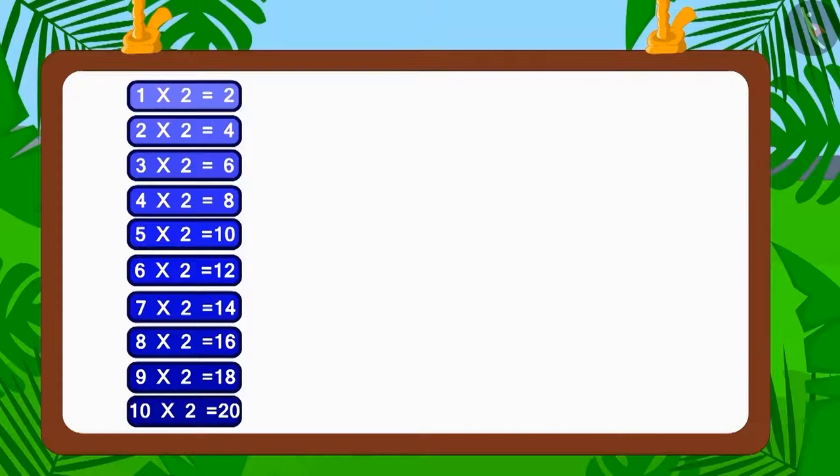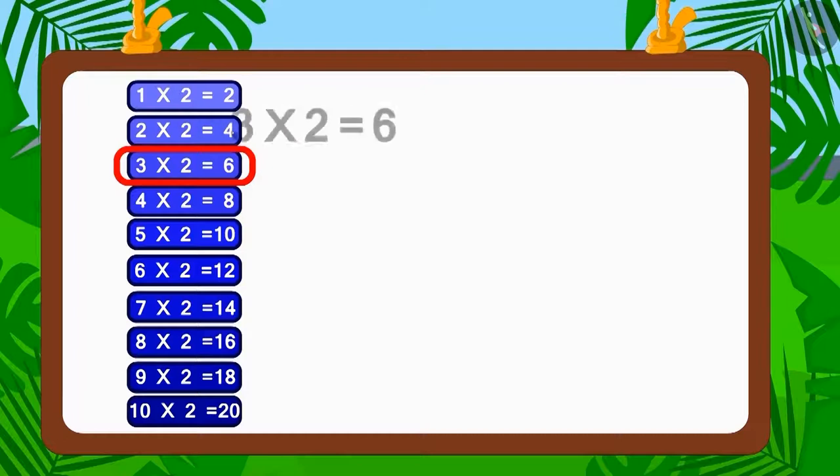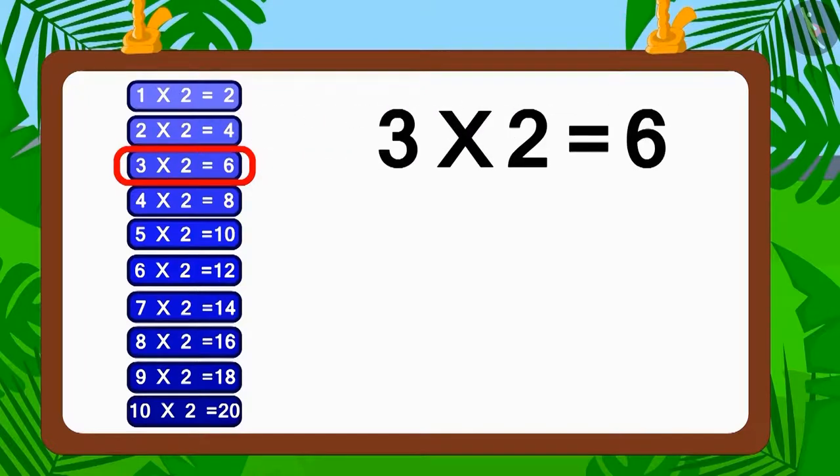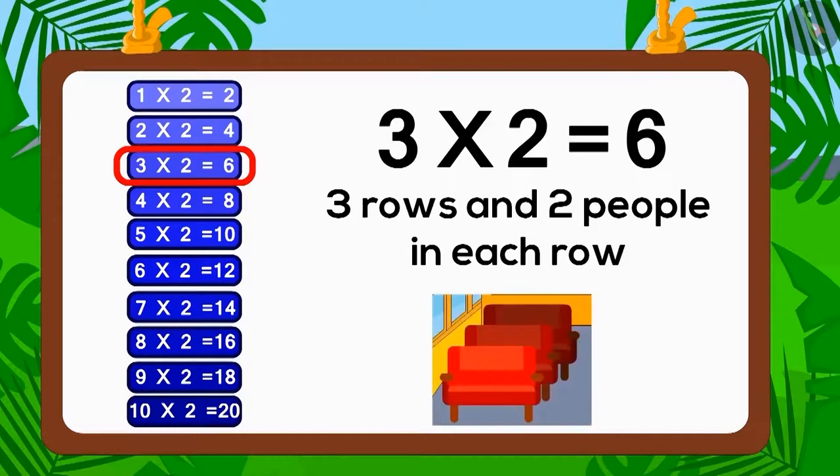Does the number six appear in the table of two? Yes, three multiplied by two is six. Therefore, two is the factor of six. So, if two people sit in each of three rows, how many people would be able to sit? Six.